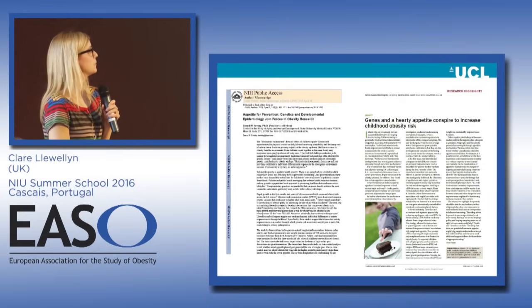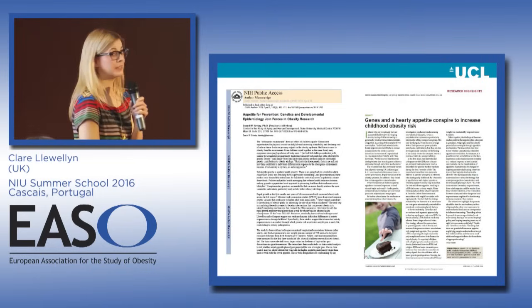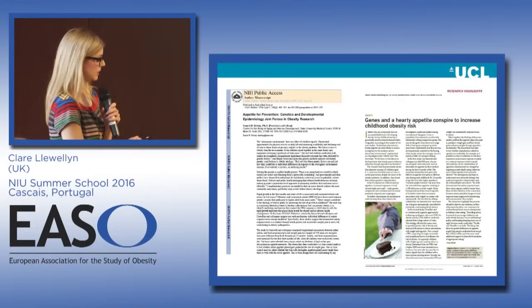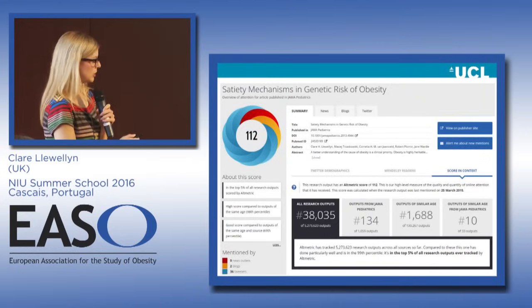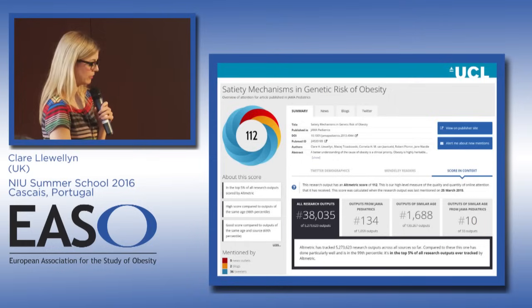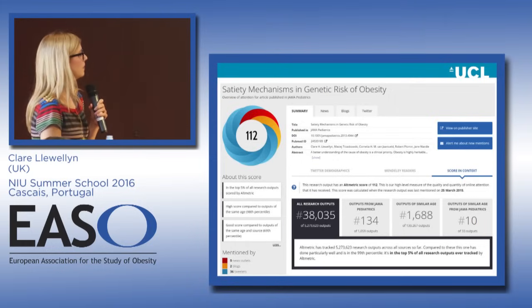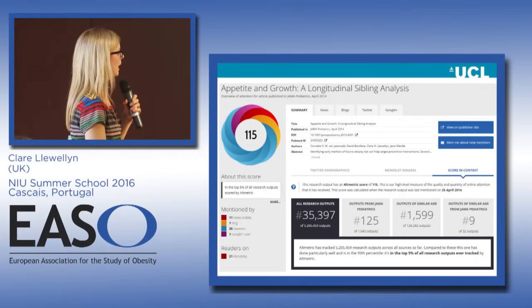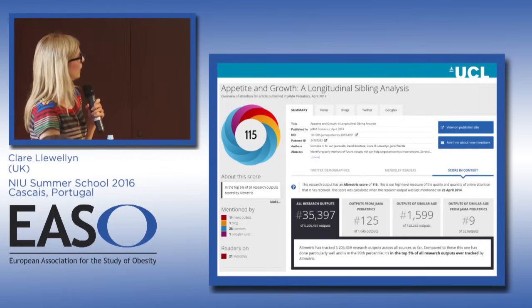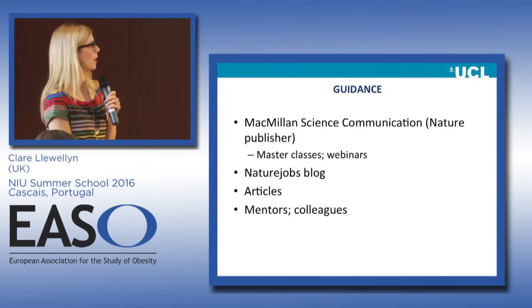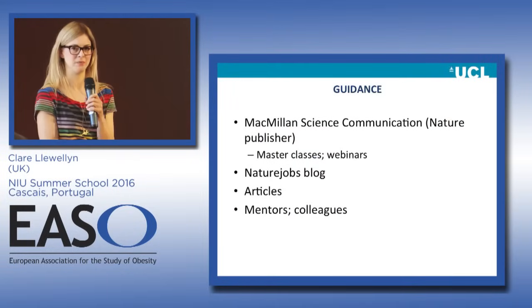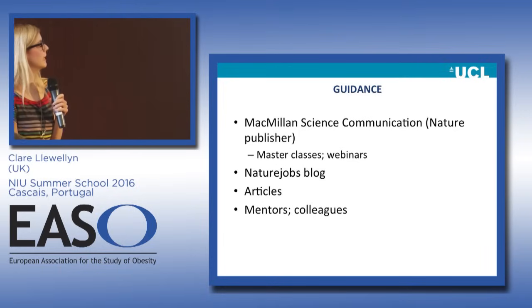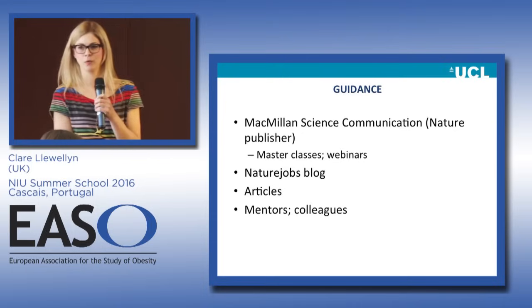After all this, we got an editorial in JAMA Pediatrics — the editor wrote a piece about the two papers. Then Nature Reviews Endocrinology wrote an article on the two papers and the whole theory. In terms of altmetrics, we were in the top five percent of all research outputs, and in the top one percent for quite a few categories for both papers. We got quite a lot of coverage outside of academia across a lot of news outlets and tweets.